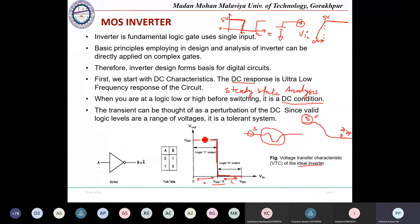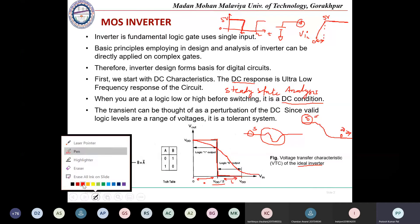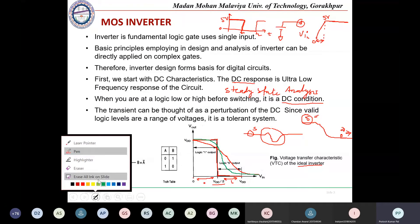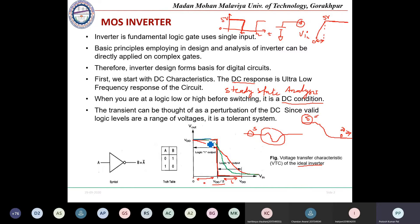However, this ideal behavior does not occur in practical inverter circuits. In a practical inverter, the characteristics show a gradual transition rather than an abrupt drop — it takes some time to go from high to zero. There are several possible shapes for the practical voltage transfer curve (VTC) of a real inverter.